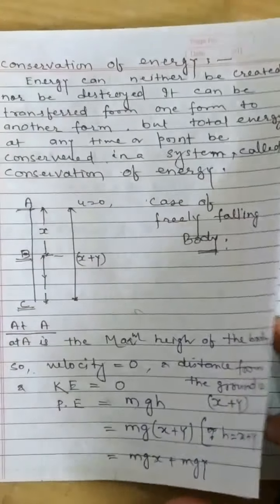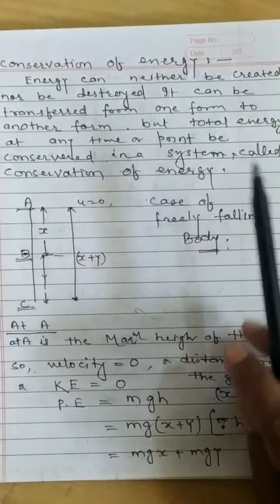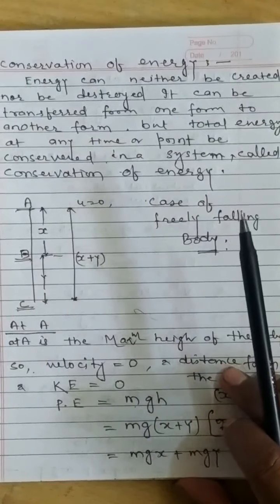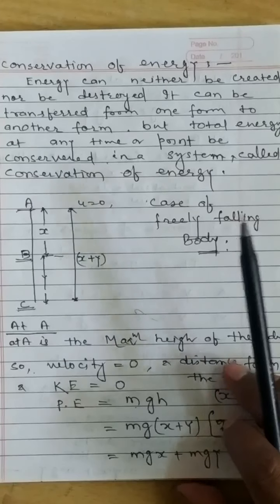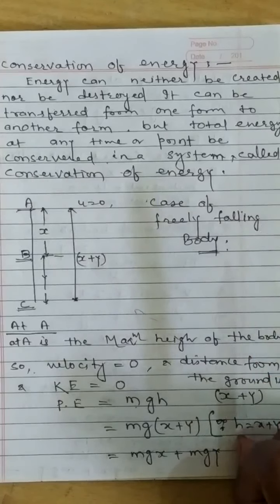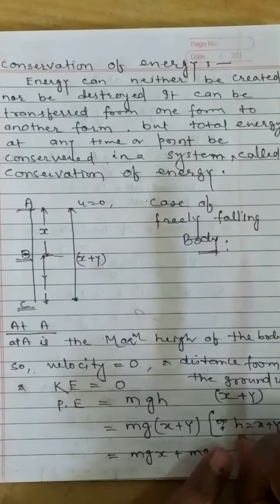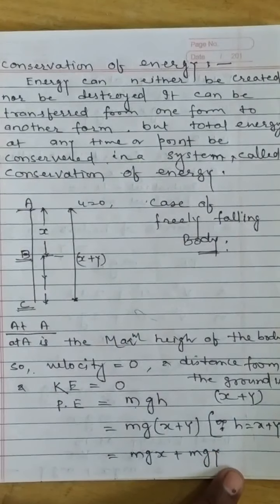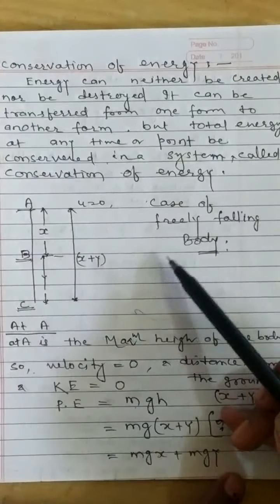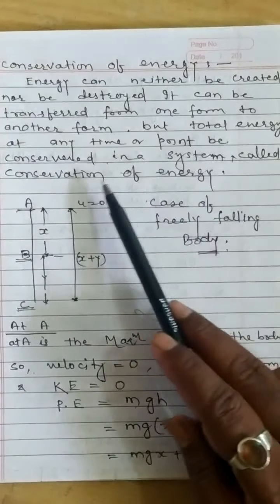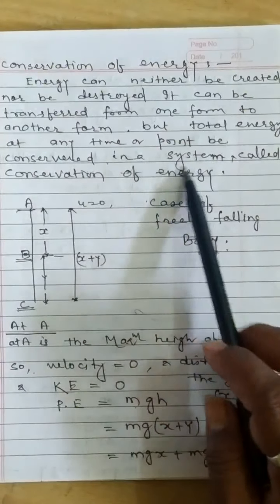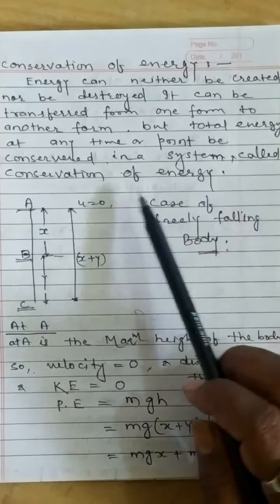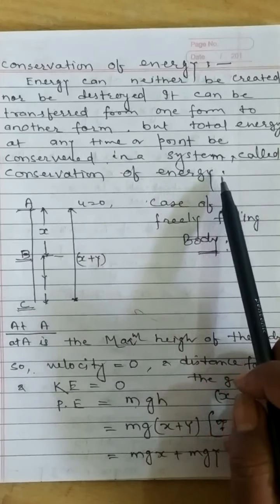Conservation of energy is a very important topic. Energy can neither be created nor destroyed. It can be transferred from one form to another form, but the total energy at any point or any time is conserved in the system. This is called the law of conservation of energy.